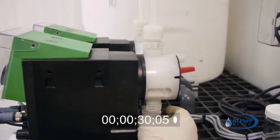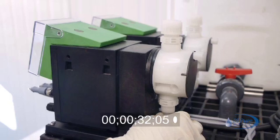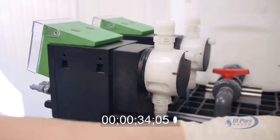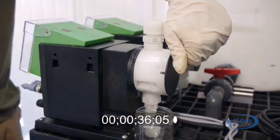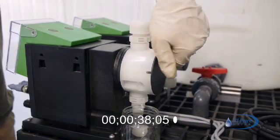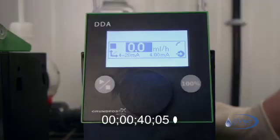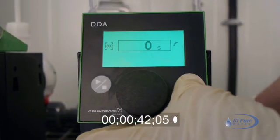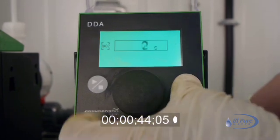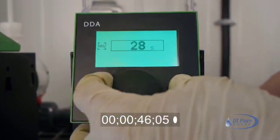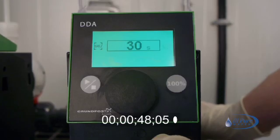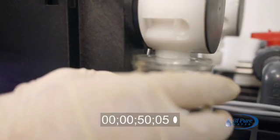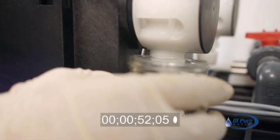Place a container at the de-aeration outlet. Loosen the de-aeration valve on the back of the pump, then press and hold the 100% speed button and turn the knob to increase the runtime. Let it run until the pump head is completely empty of chlorine.